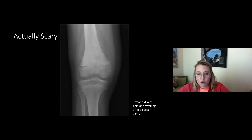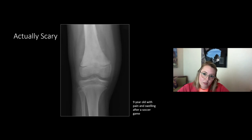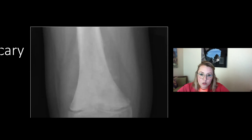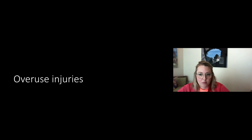Here is a nine-year-old girl who came to the emergency room with pain and swelling after a soccer game. The x-ray showed a sclerotic lesion replacing the femur, elevated periosteum with a Codman's triangle, extra-osseous bone formation, and a large extra-osseous tumor with mass effect — this was an osteosarcoma. Not everything that presents as trauma is trauma.